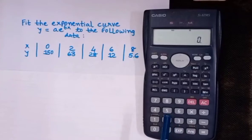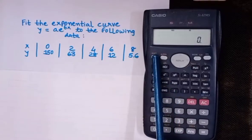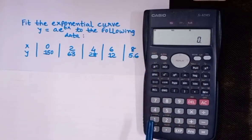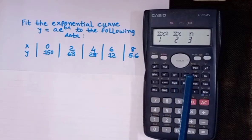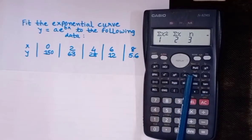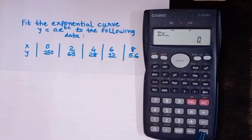After that, press AC, then press shift and S-sum, that is press 1. From this we'll find sigma x. Sigma x is option 2, so click on 2, then press equal to. We're getting 20.